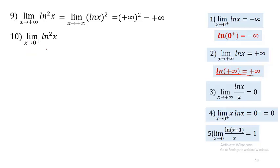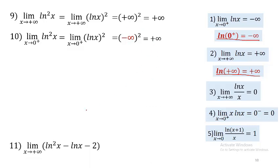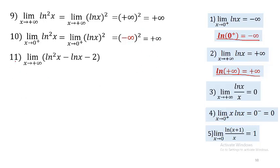Find the limit of (ln x)² as x tends to 0⁺. When x tends to 0⁺, ln x tends to −∞. (−∞)² = +∞.